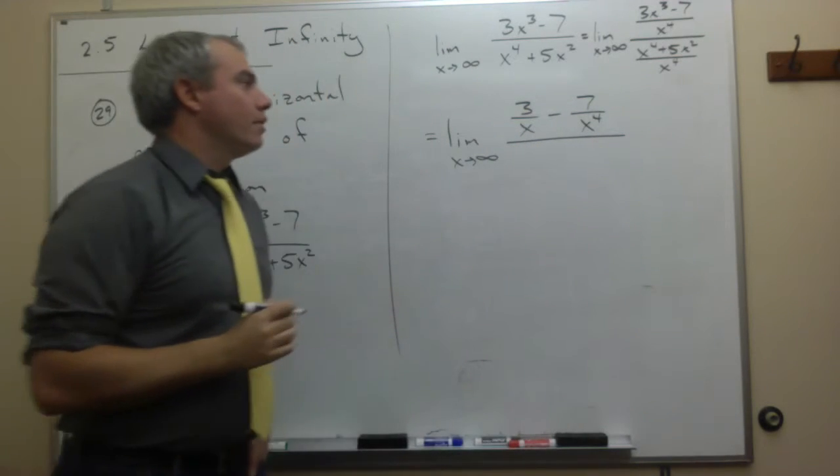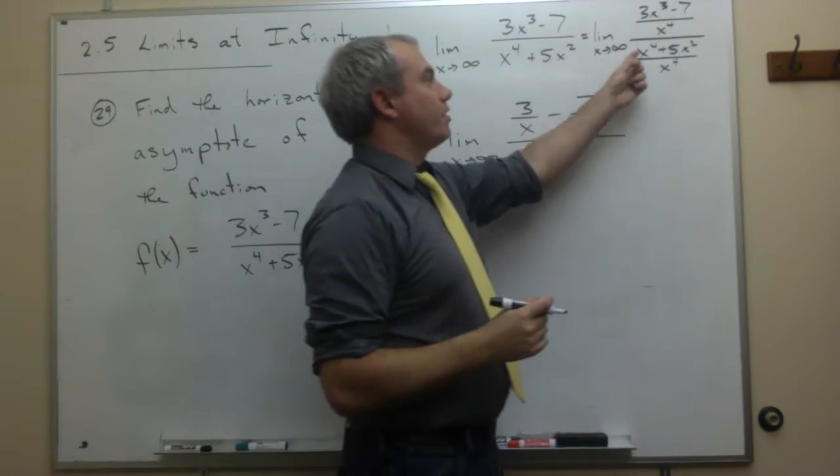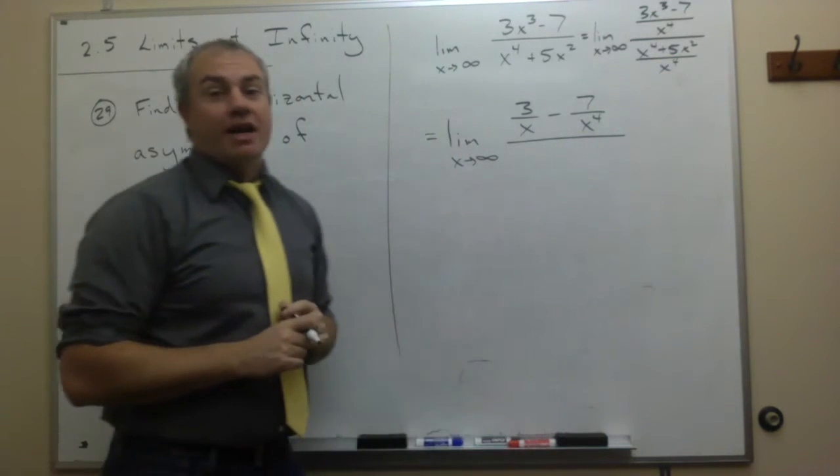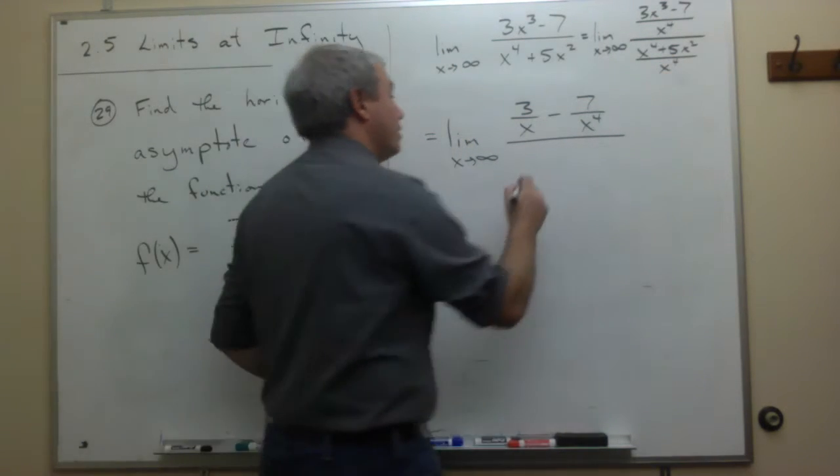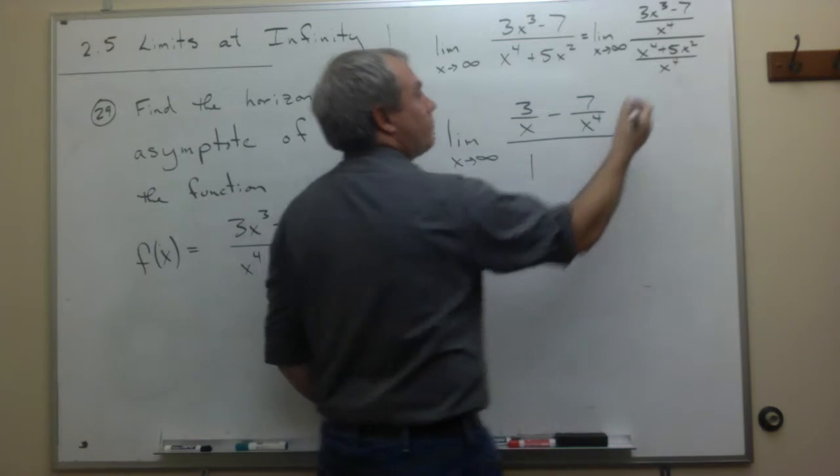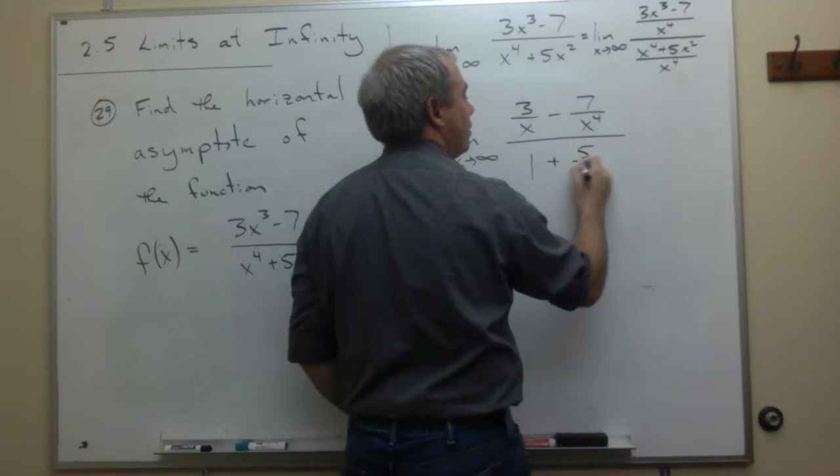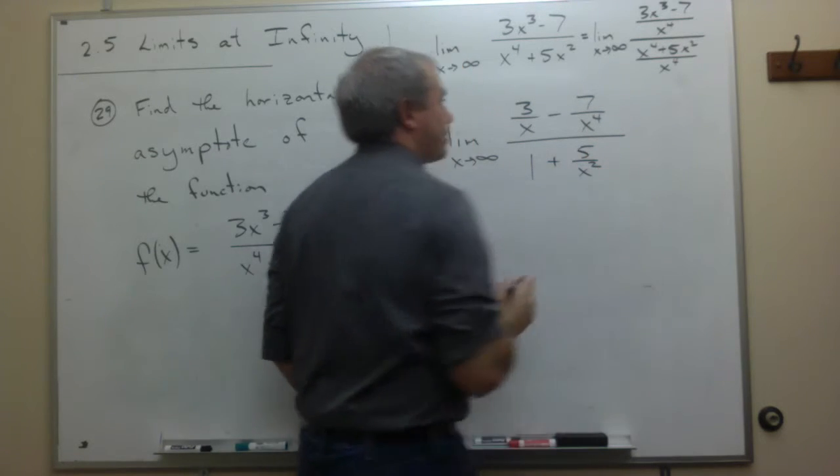Then I get minus 7 over x to the fourth, divided by, on the bottom I have x to the fourth divided by x to the fourth, but x to the fourth divided by x to the fourth is just 1. And then I get plus 5x squared over x to the fourth, which is just 5 over x squared.